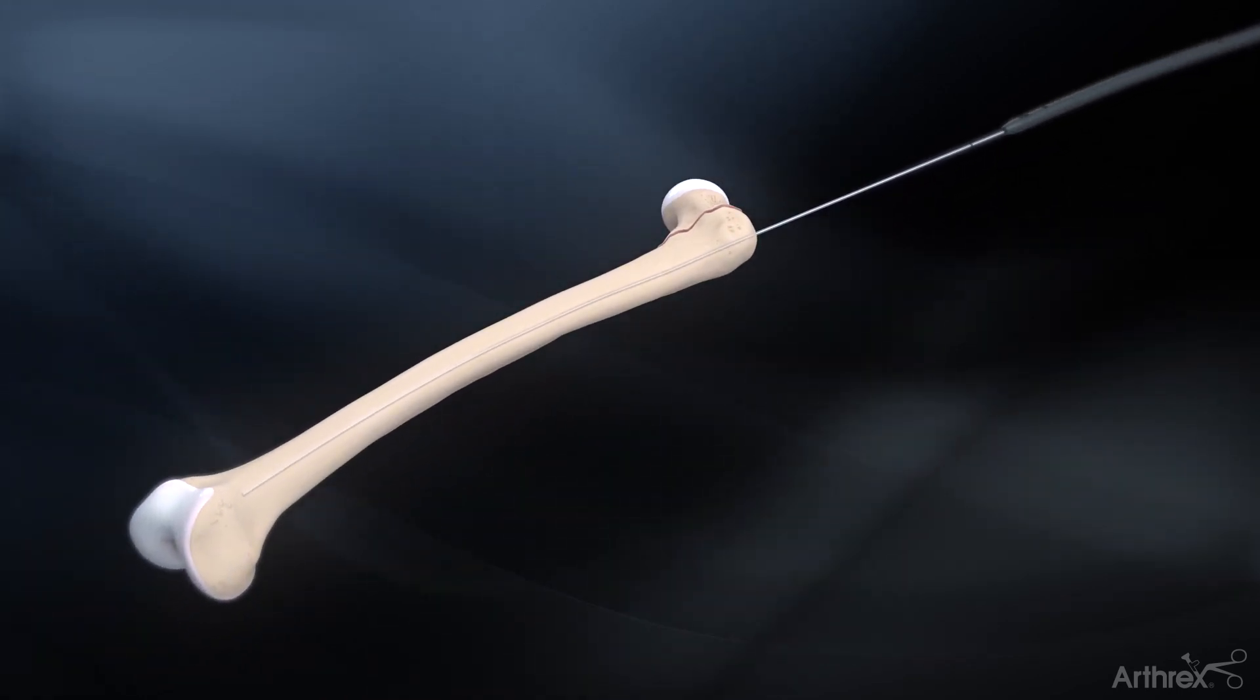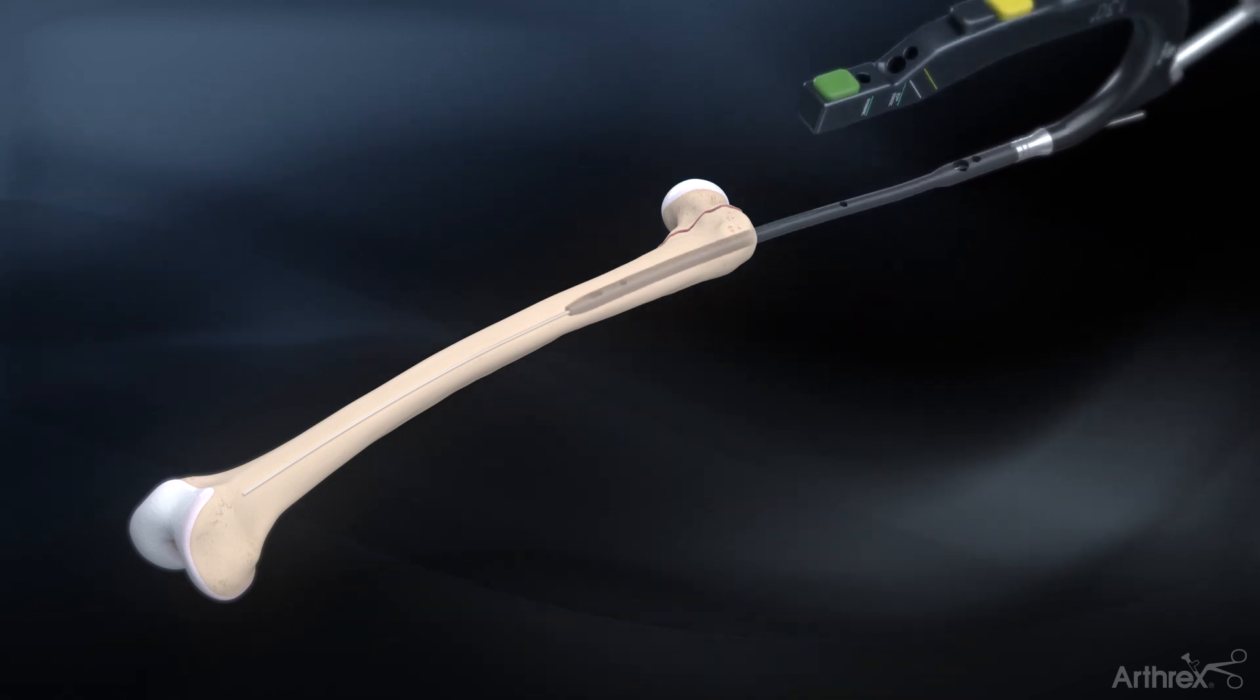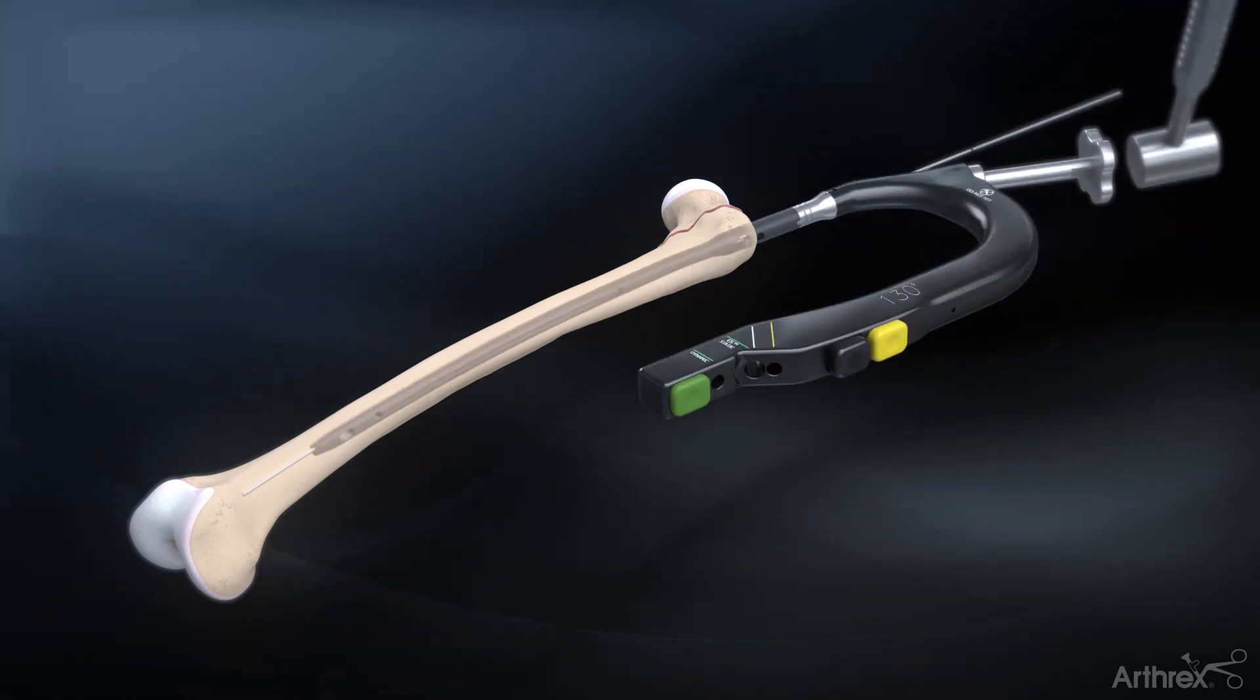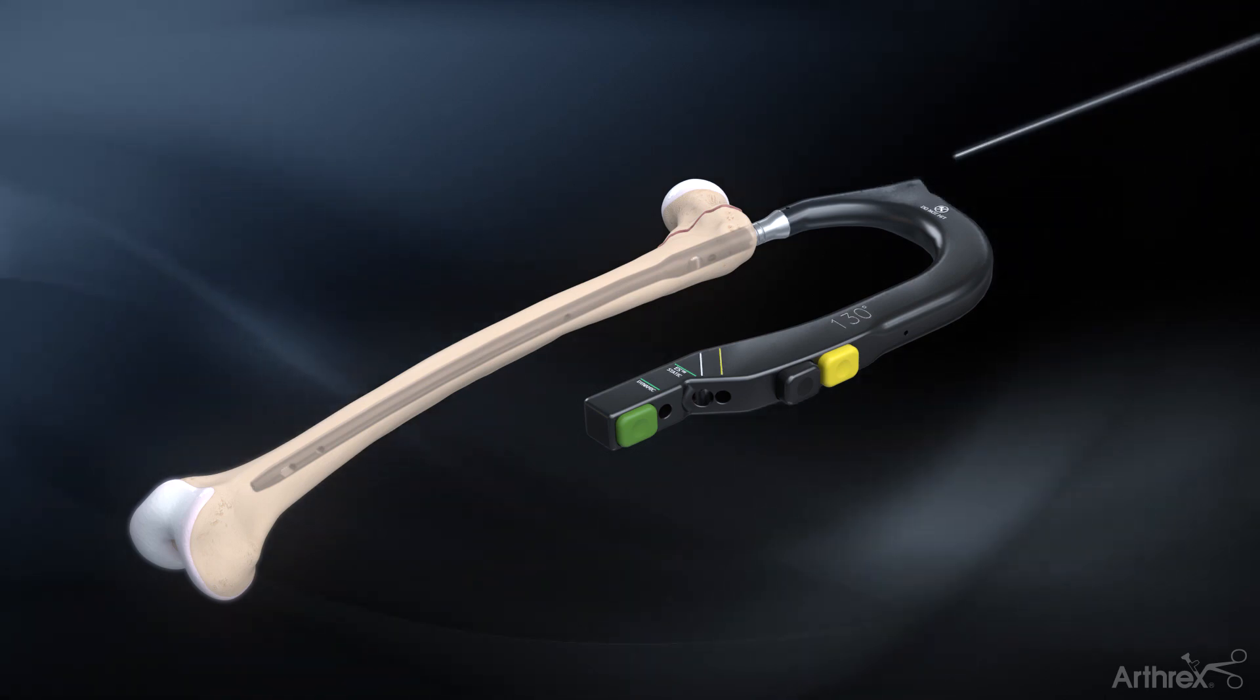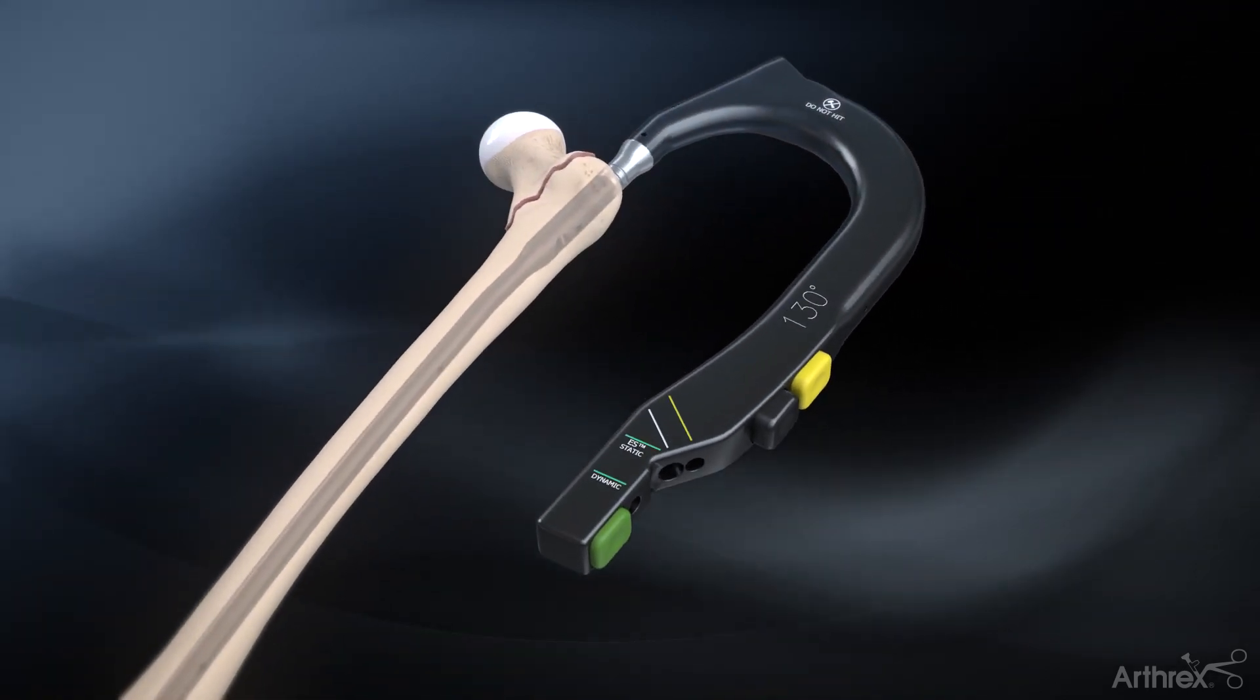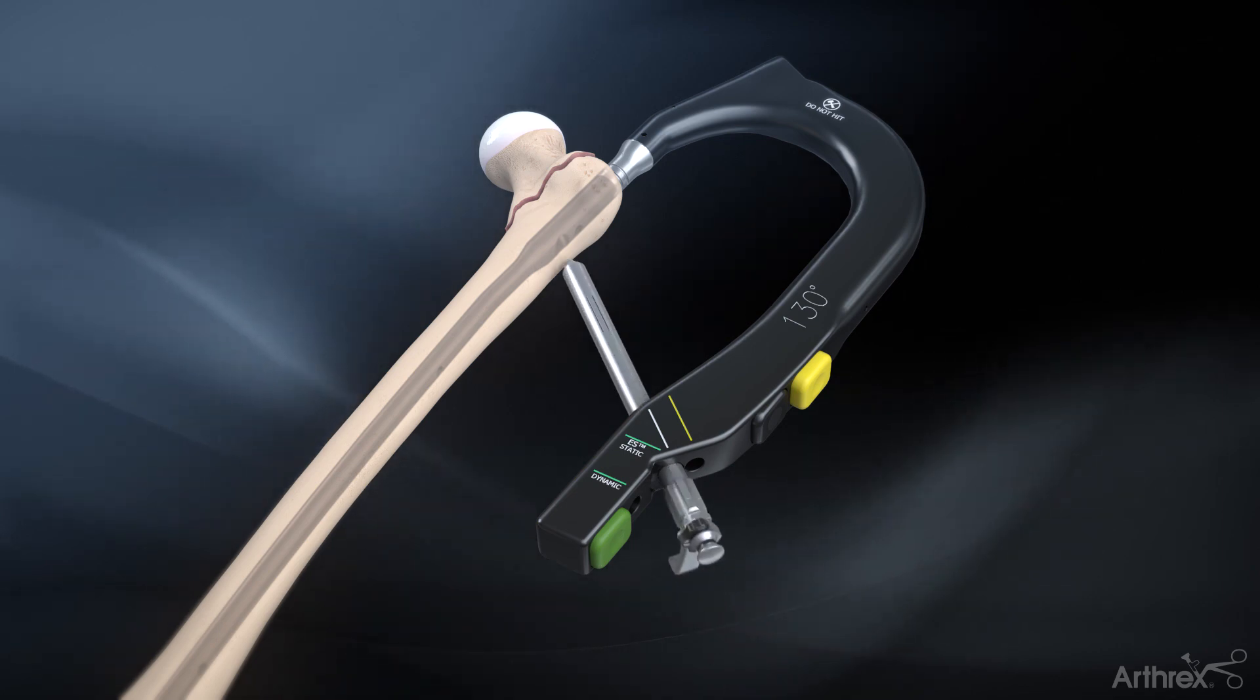Introduce the nail into the proximal femur over the guide wire using the radiolucent targeting arm to control nail rotation. Complete the insertion with gentle mallet strikes on the impactor pad. Once the desired nail depth has been achieved, insert the lag screw triple sleeve assembly through the targeting arm by pressing the black button. Slide in the assembly until it contacts the lateral cortex of the femur.